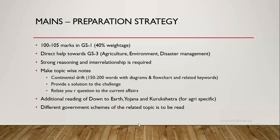Strong reasoning and interrelationship is required. If the question comes on why a particular fishing ground is available at Grand Banks — an area towards the eastern part of North America — you should be able to answer with the help of the Labrador Current and Gulf Stream, as these cold and warm currents meet at the area where the fishing ground is located. For notes, make topic-wise notes — for example, for continental drift, your notes should not exceed 100-150 words and should have diagrams, flowcharts, and related keywords.